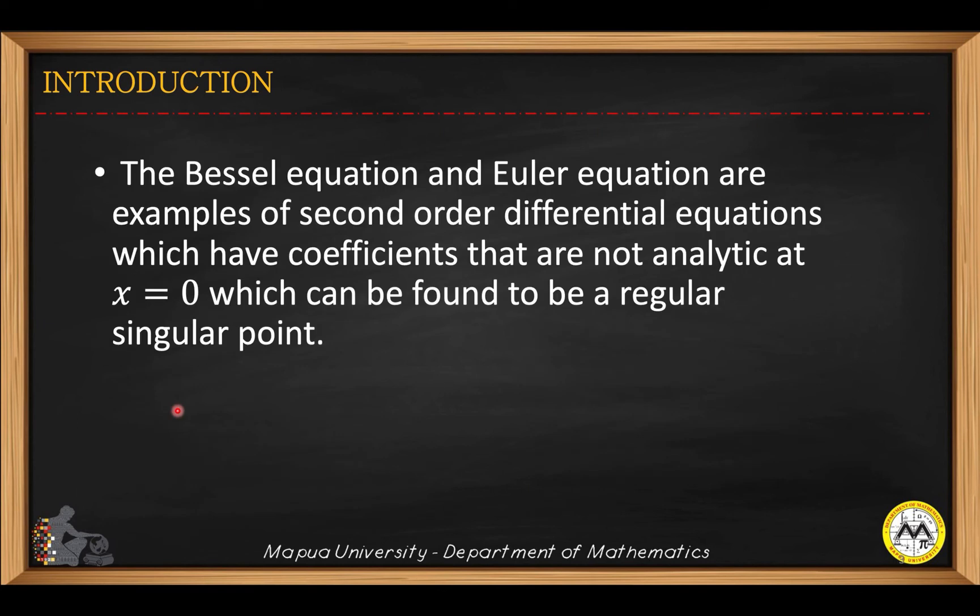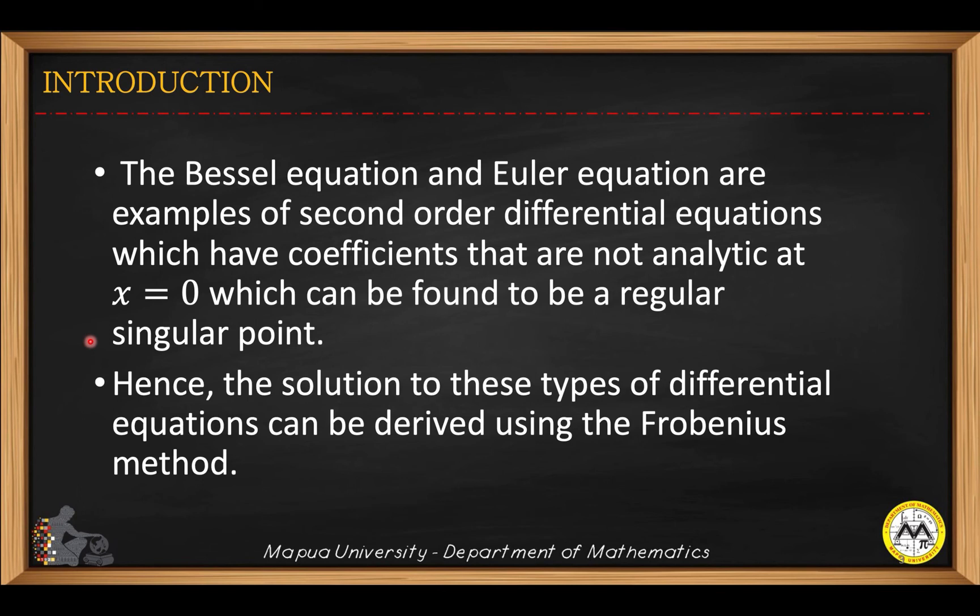The Bessel equation and Euler equation are examples of second-order differential equations which have coefficients that are not analytic at x equals zero, which can be found to be a regular singular point. Hence, the solution to these types of differential equations can be derived using the Frobenius method.